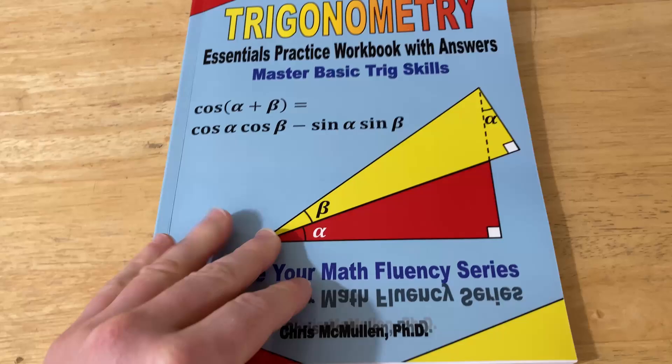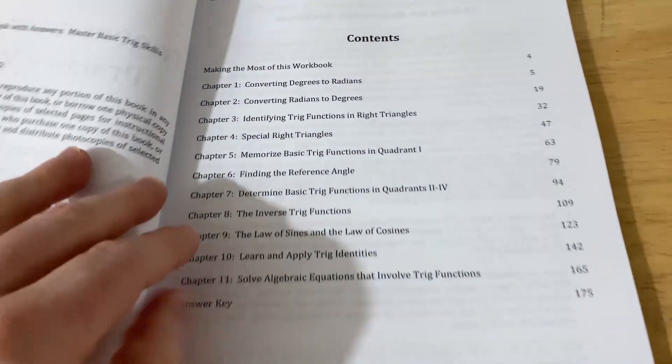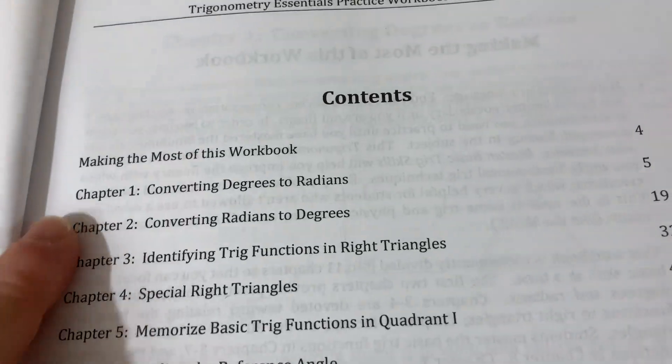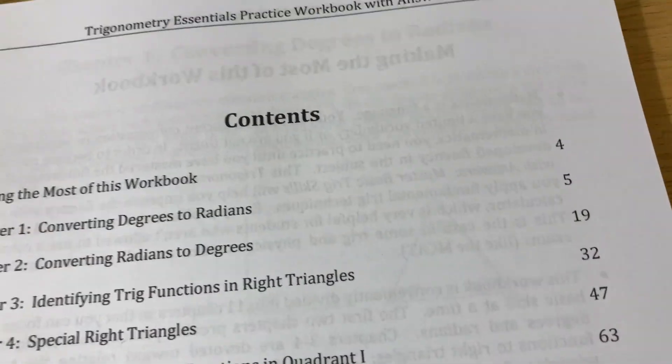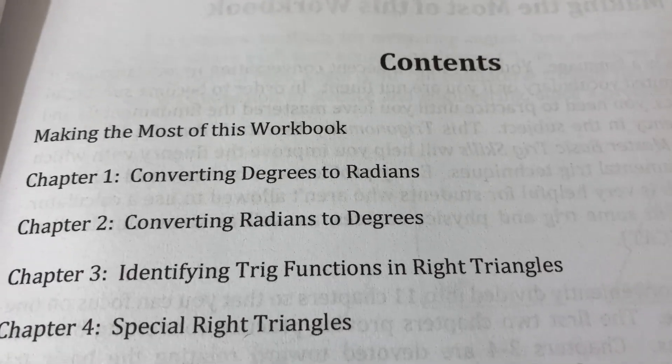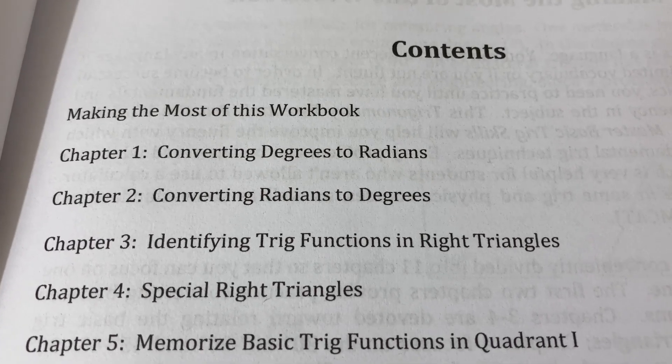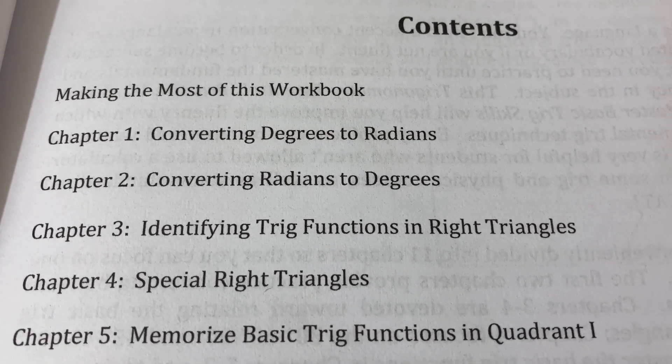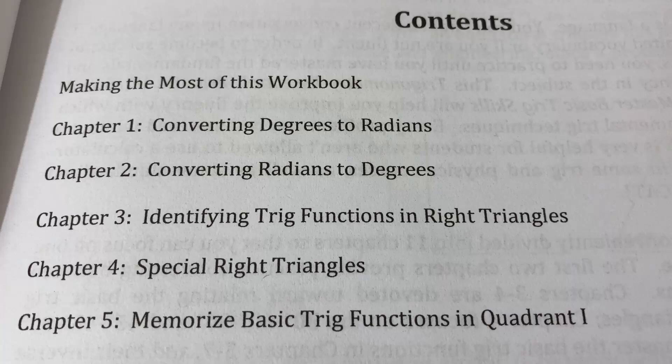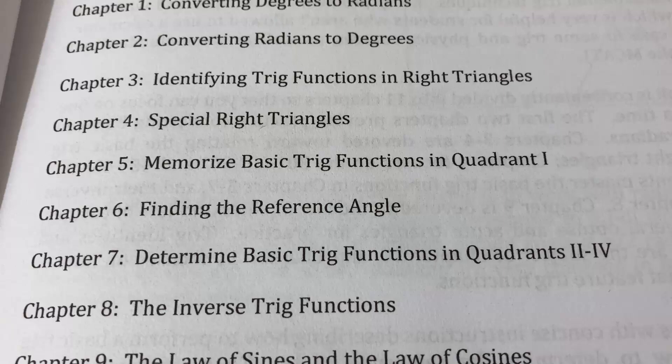But this one is really cool because it has specific trig topics for which people are known to struggle with, and Chris emphasizes those topics in this book. Okay, let's go ahead and open up the book and look at the contents and the layout because I think you're going to be really impressed. Chapter one is converting degrees to radians. Chapter two is converting radians to degrees. Three is on identifying trig functions in right triangles. Four is on special right triangles.